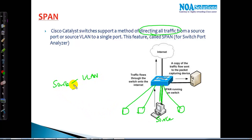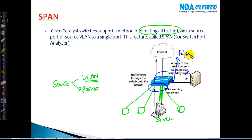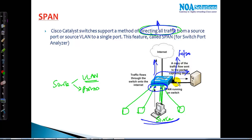You can specifically take the source as a VLAN or a specific port number, and redirect all the traffic going on those specific ports to another port — let's say port number 20. It's not actually redirecting; it's directing a copy of the traffic, meaning the actual traffic will still flow on the original port as well as being directed to another port.